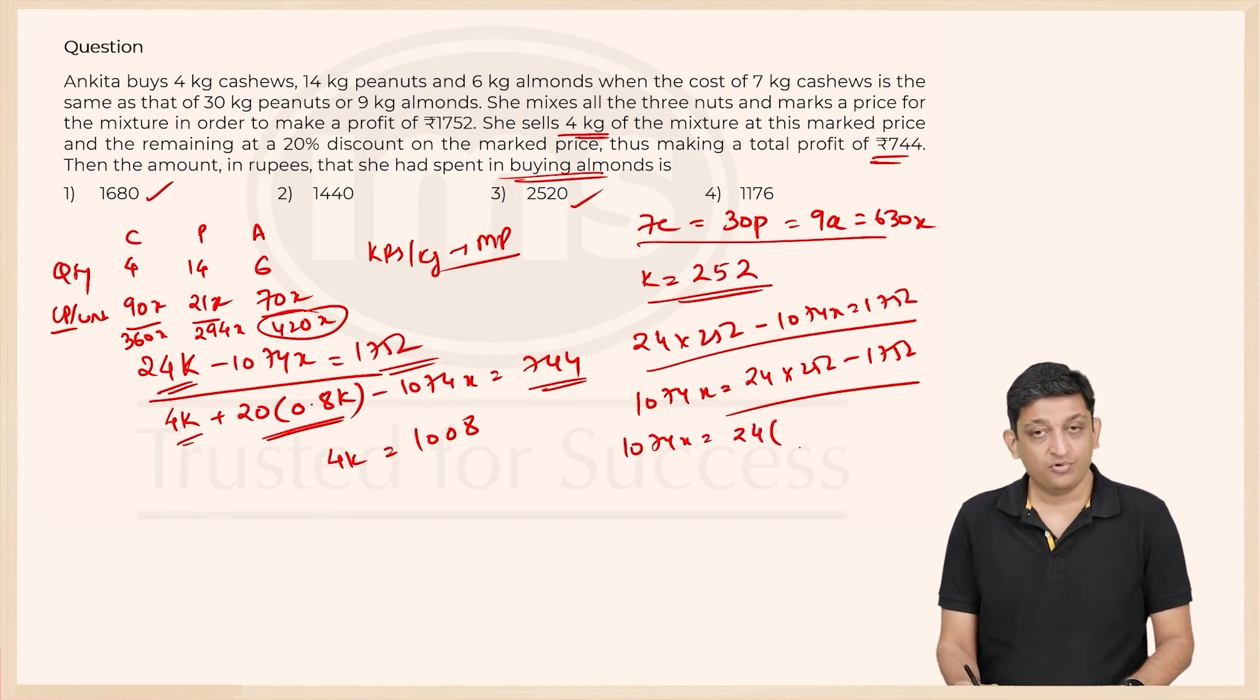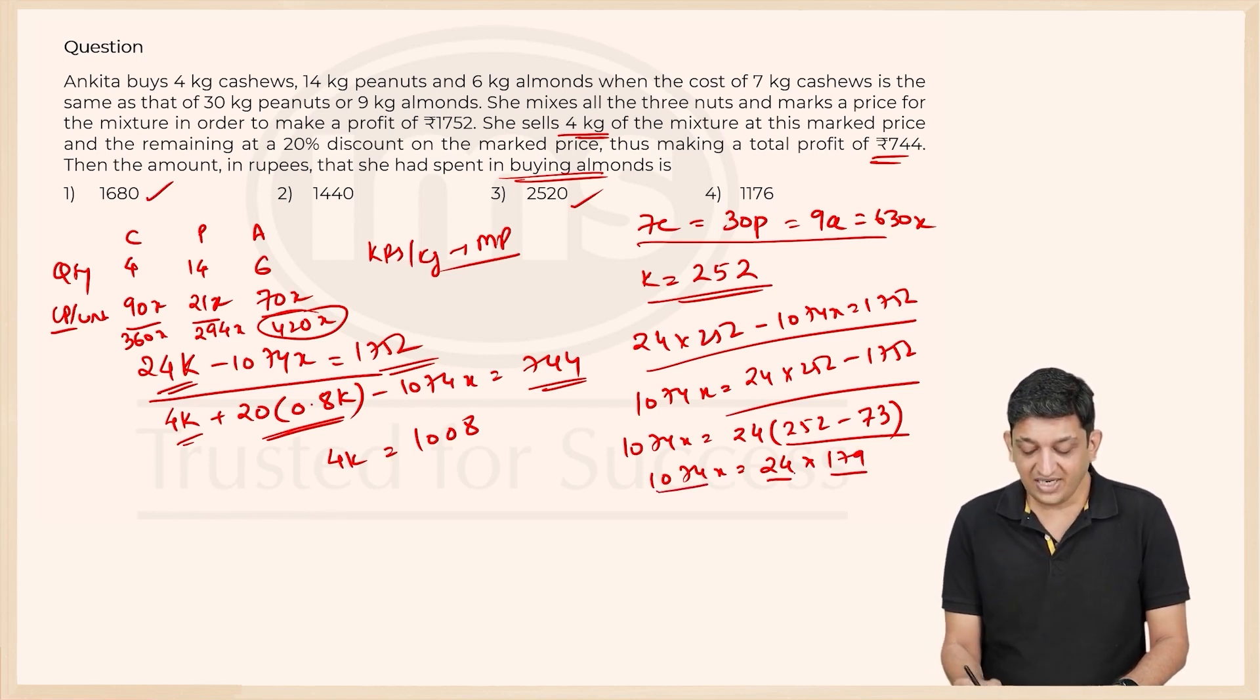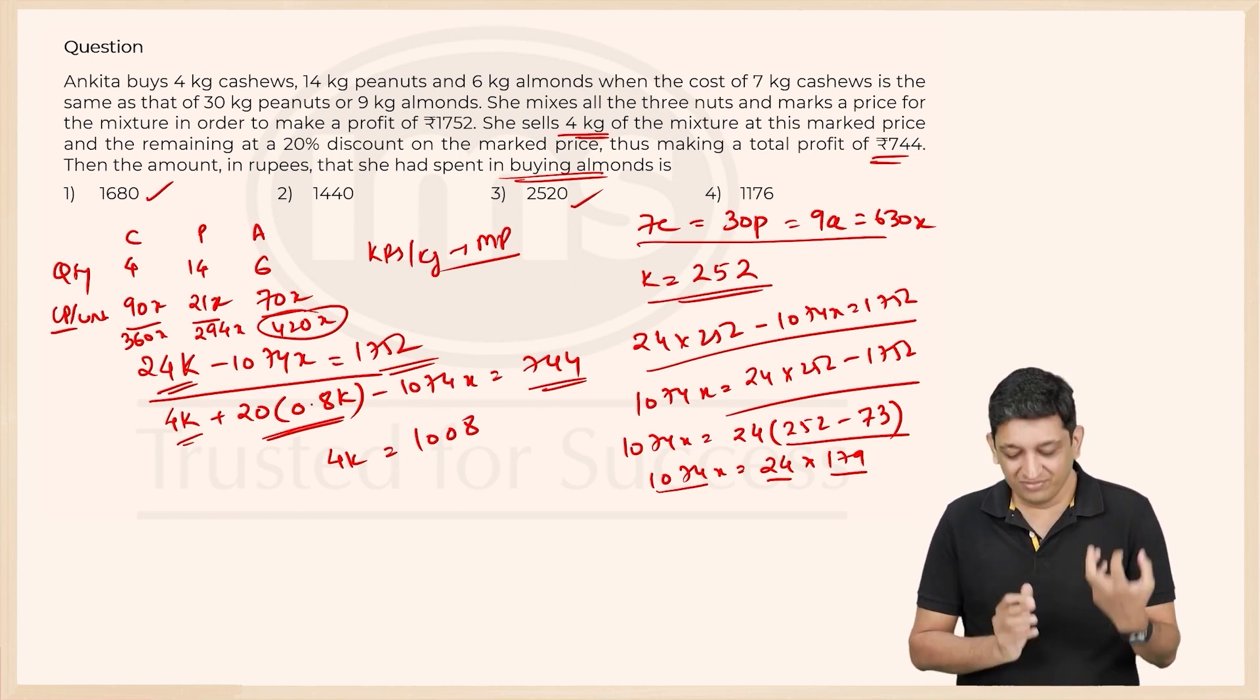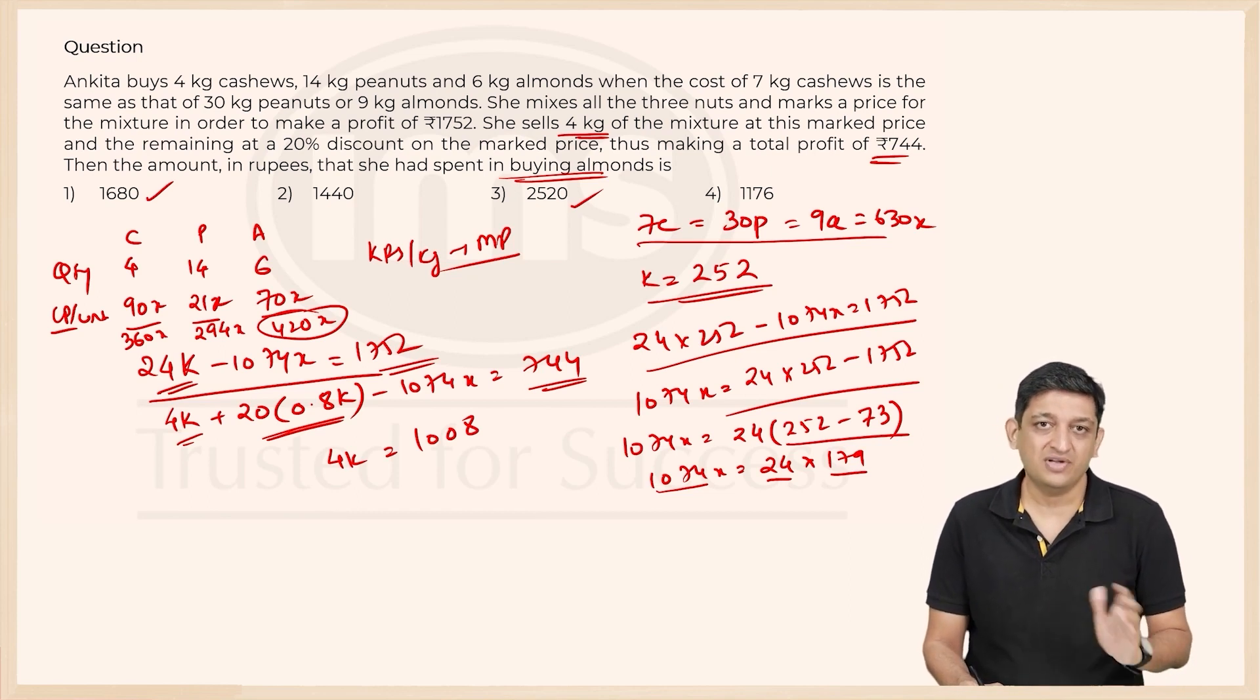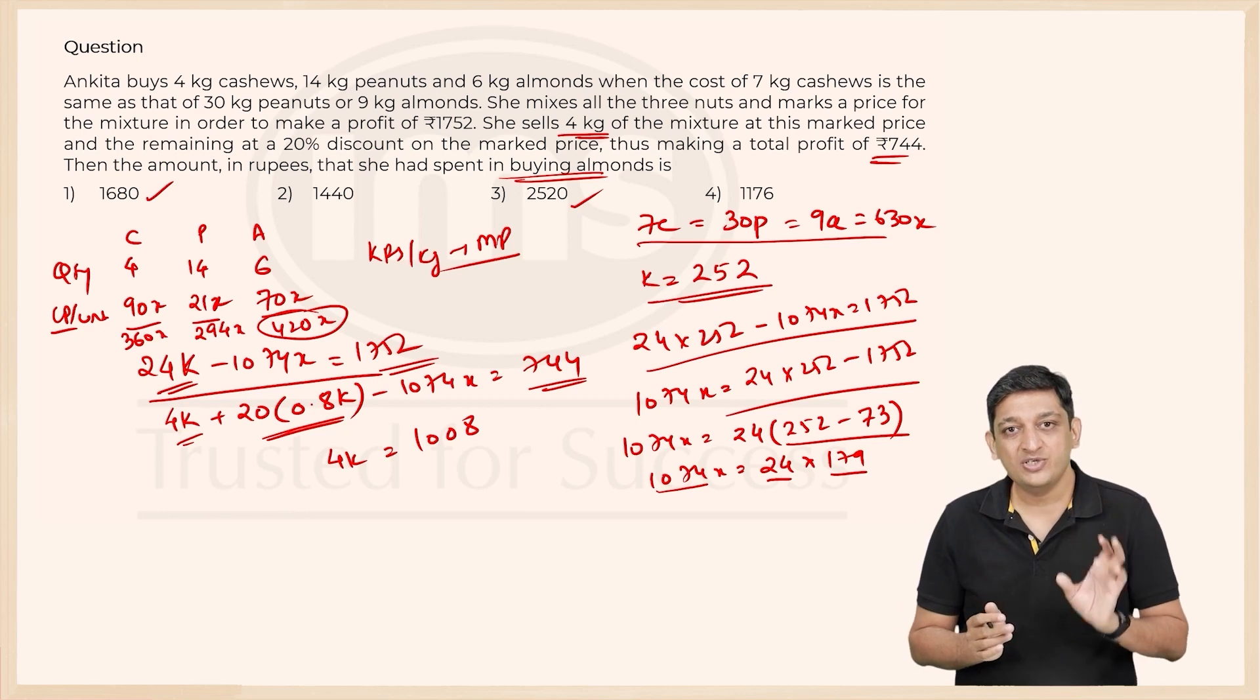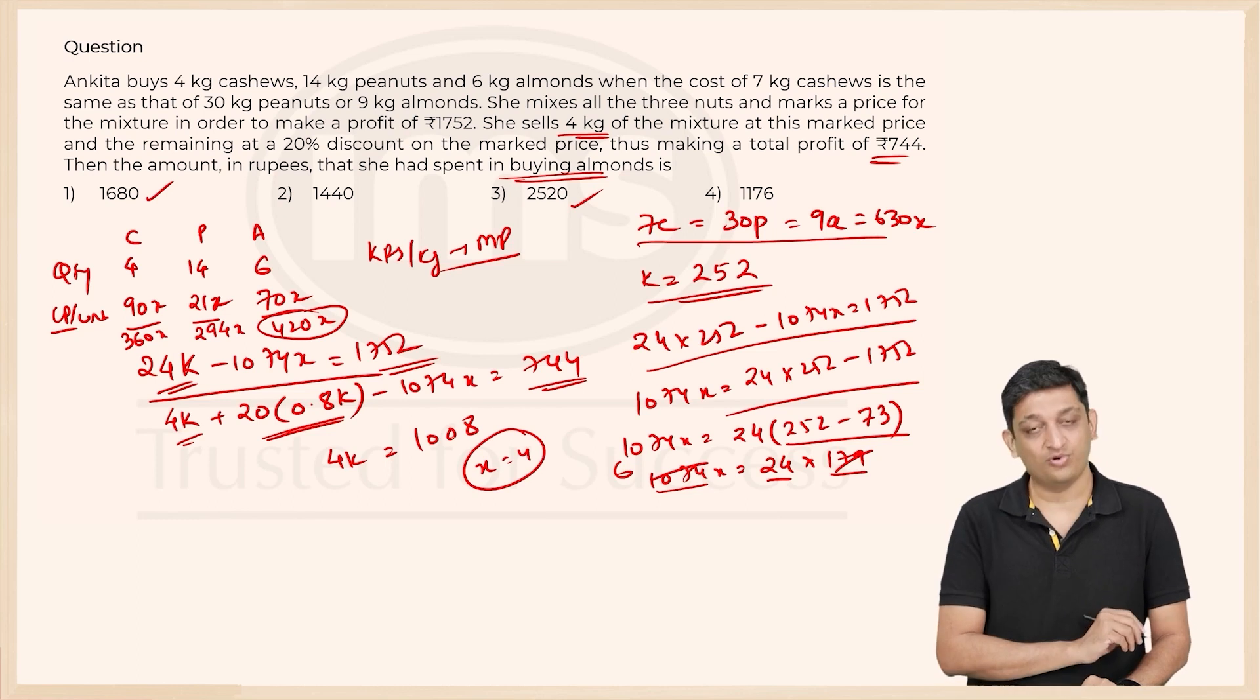So 1074X in this context will be 24 multiplied by 252 as it is minus 24 sevens are 168 and we are left with 72, so 24 threes are 72. So we now have 1074X equals 24 into 252 minus 73 which is 179. Now we already figured out that 1074 is not divisible by 24. Now can you make something out of 179 and 1074? Some number that ends in 9 needs to be multiplied by something to make it end in a 4. 179 into what ends in a 4? Into 6 will basically be the answer. So what is 179 into 6? 17 sixes are 102, so 1020 plus 9 sixes are 54, so 1020 plus 54 gives you 1074. So 179 into 6 is 1074X, 6X is 24, so X becomes 4 in this particular context.